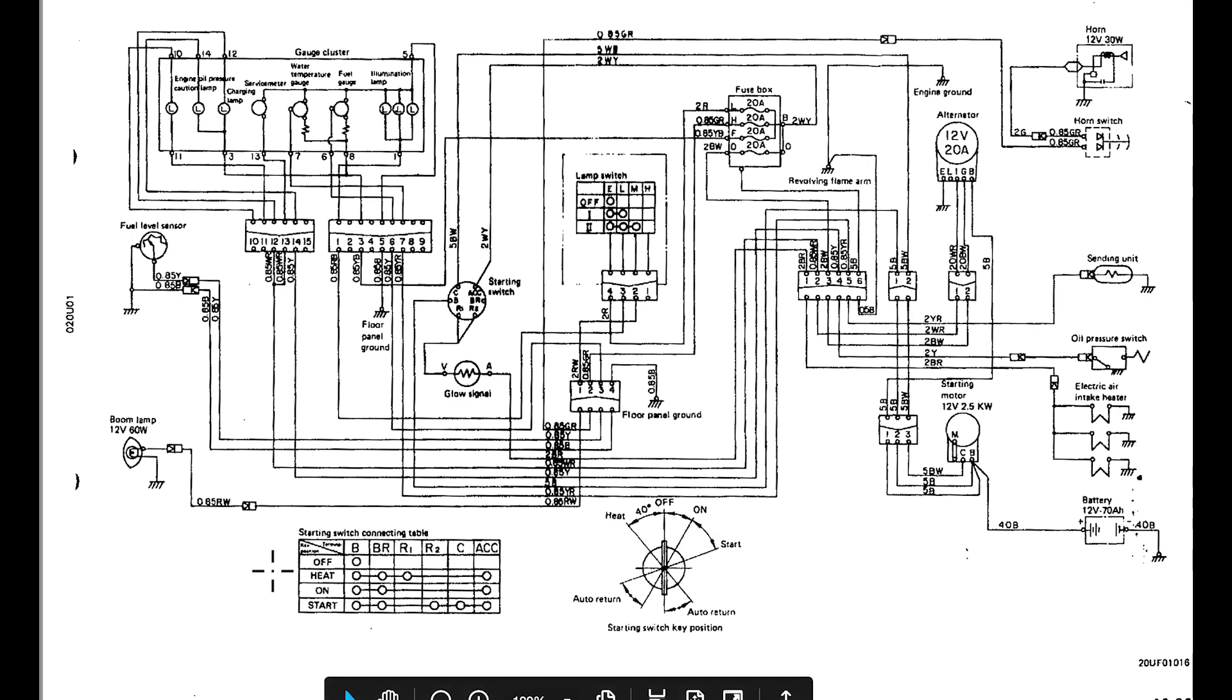We have the same thing here. We go to on and the key will stay to on. If we turn it all the way to start, it'll auto return to the on position. Next to that, we have a pictorial representation of how that switch works. So if we're in the off position, there's no contact being made across this bar. If we turn it to the heat position, which would be turn this over to here, then the heat position would be connecting with the BR and the R1 terminal and the ACC terminal. If we turn it to the on position, then it'll be connected to B, BR and accessory or ACC. And if we turn it to the start position, it will be to B, BR, R2, C, and ACC.